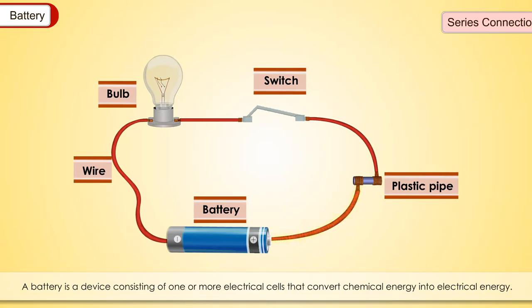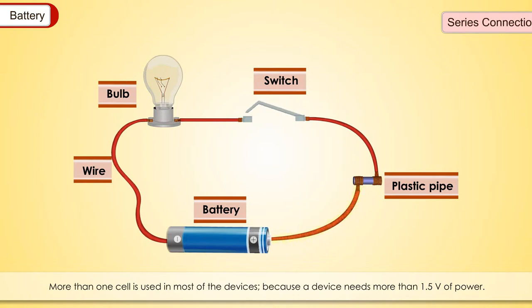Battery: A battery is a device consisting of one or more electrical cells that convert chemical energy into electrical energy. More than one cell is used in most of the devices, because the device needs more than 1.5 volts of power. For example, an automobile battery may be made up of six or eight cells that are connected together. Every battery is basically an electric cell where chemical reactions take place between two electrodes which act as the source of the chemical energy or electric charge for an electric current to flow. When more than one cell is used in an electric circuit, they have to be connected in a proper manner for electric current to flow through the circuit. The batteries can be connected in two ways: series or parallel.